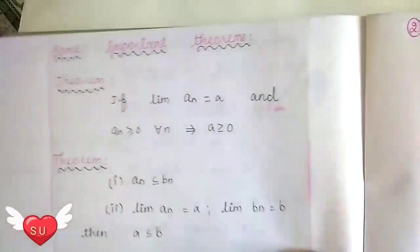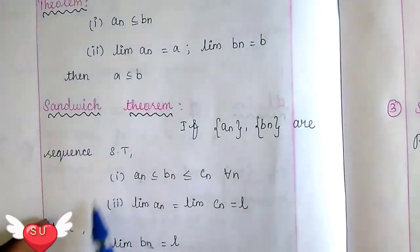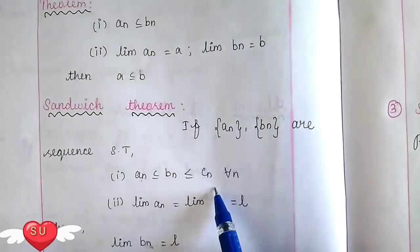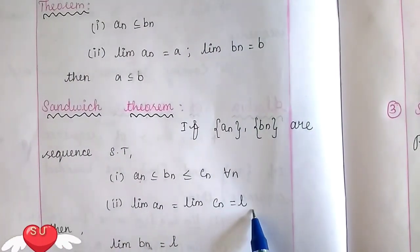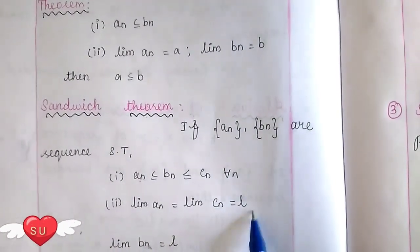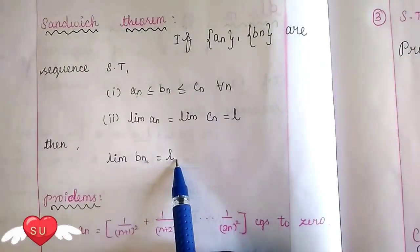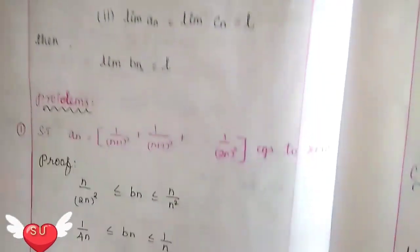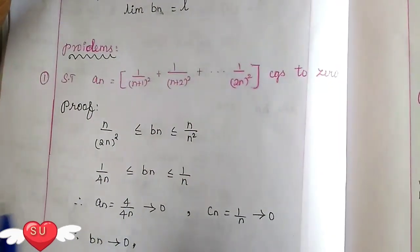Next is the Sandwich theorem. We are looking for a sequence: an ≤ bn ≤ cn. If the limit of an and the limit of cn both equal L, then you can write the limit of bn equals L as well. Some problems follow.